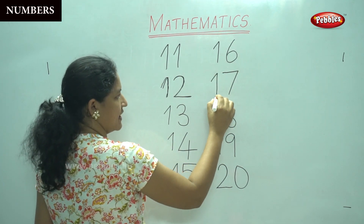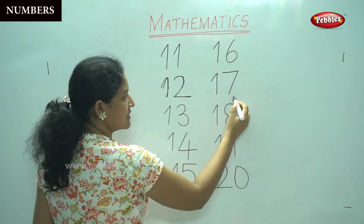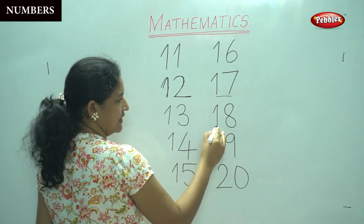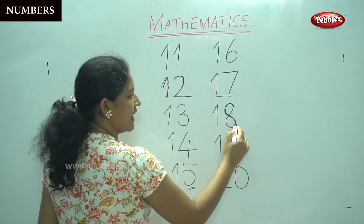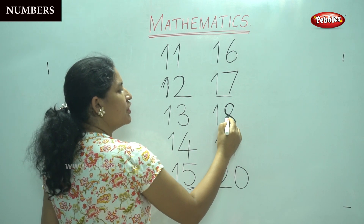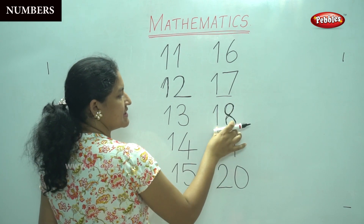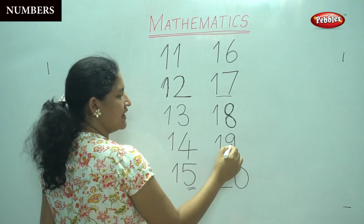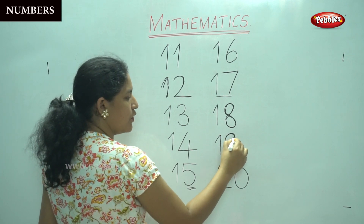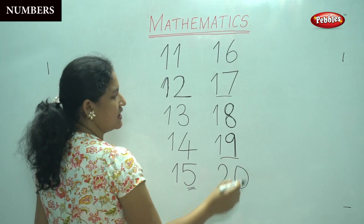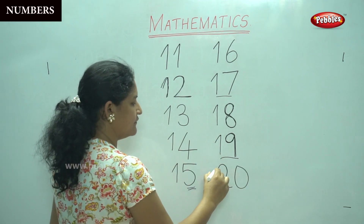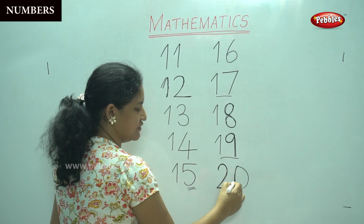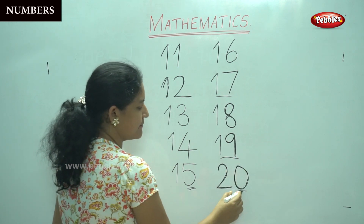A slanting line, a straight line, a sleeping line, a slanting line — this is number 17. A slanting line, a straight line, and for the eight you will form an S and without taking away your finger from the book you will continue up — this is number 18. A slanting line, a straight line, and for the nine you will draw a small O with a line going down — this is number 19. And for 20 you will have a curve which comes down and a sleeping line, and as usual an O for the zero — this is number 20.